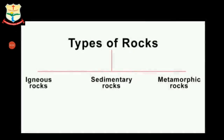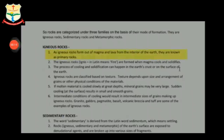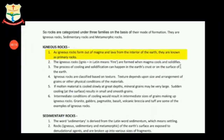Classification of rocks: three types of rocks are generally recognized on the basis of their formation — igneous rock, sedimentary rock, and metamorphic rock. Now let's understand each one of them and learn about igneous rock, its types and formation.